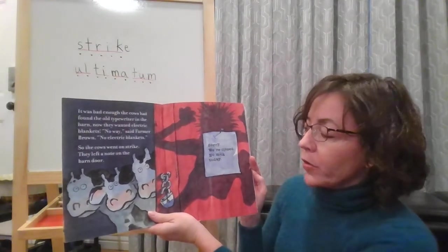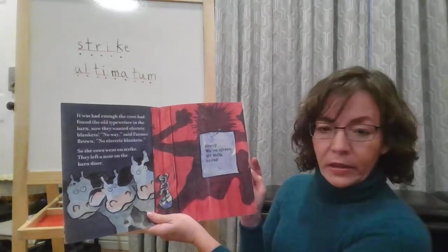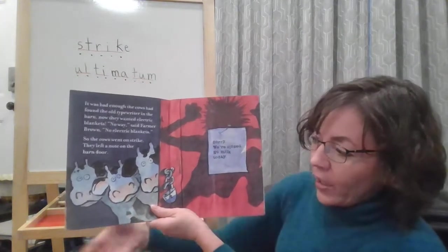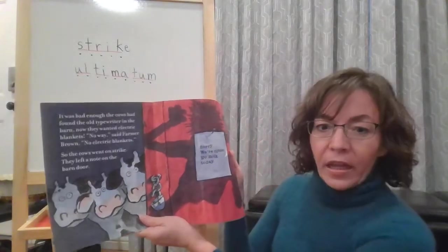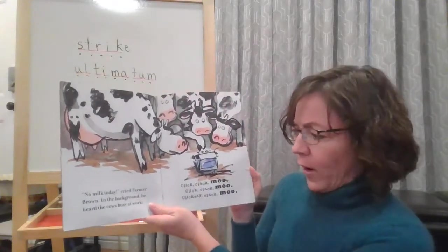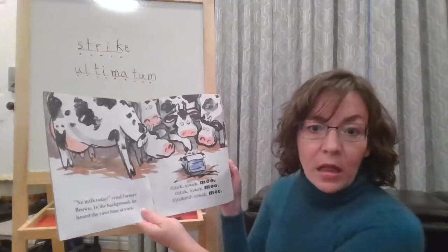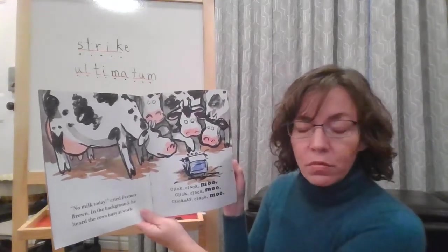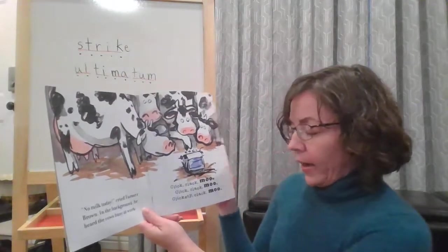They left a note on the barn door. Sorry, we're closed. No milk today. So their way of going on strike was to not give milk to Farmer Brown. They closed shop. No milk today, cried Farmer Brown. In the background, he heard the cows busy at work. Click Clack Moo. Click Clack Moo. Click Clack Moo. Clickety Clack Moo.